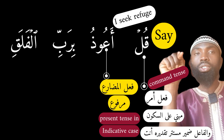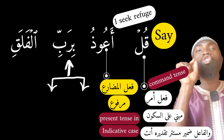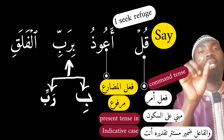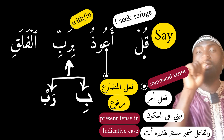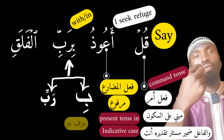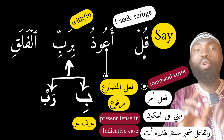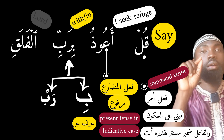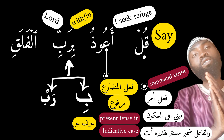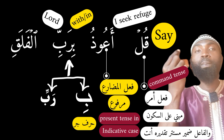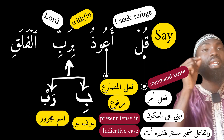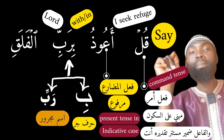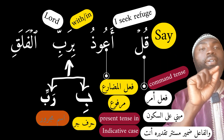You seek refuge from what, or in what? 'Bi-Rabbi' — as we said earlier, this is a two-in-one word. The first word is 'Bi' and the second is 'Rabbi.' 'Bi' means 'with' or 'in' — I seek refuge with, or I seek refuge in. Grammatically, 'Bi' is a harf jar, a preposition that changes the noun coming after it to carry kasra, putting it in the genitive case. 'Rabbi' means 'Lord' and is ismun majrur, carrying kasra. So 'Qul A'udhu bi-Rabbi' means 'Say, I seek refuge with the Lord.'